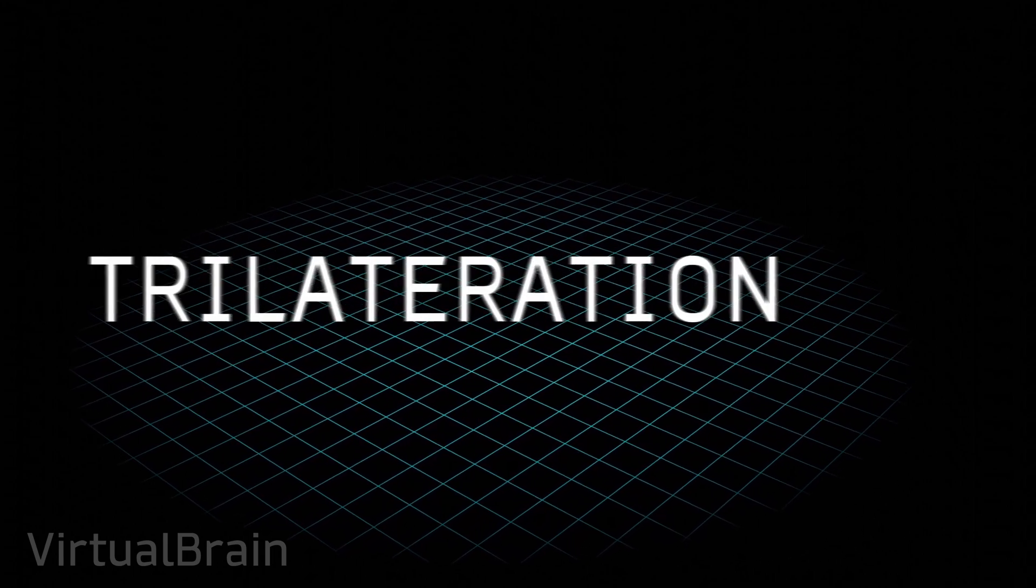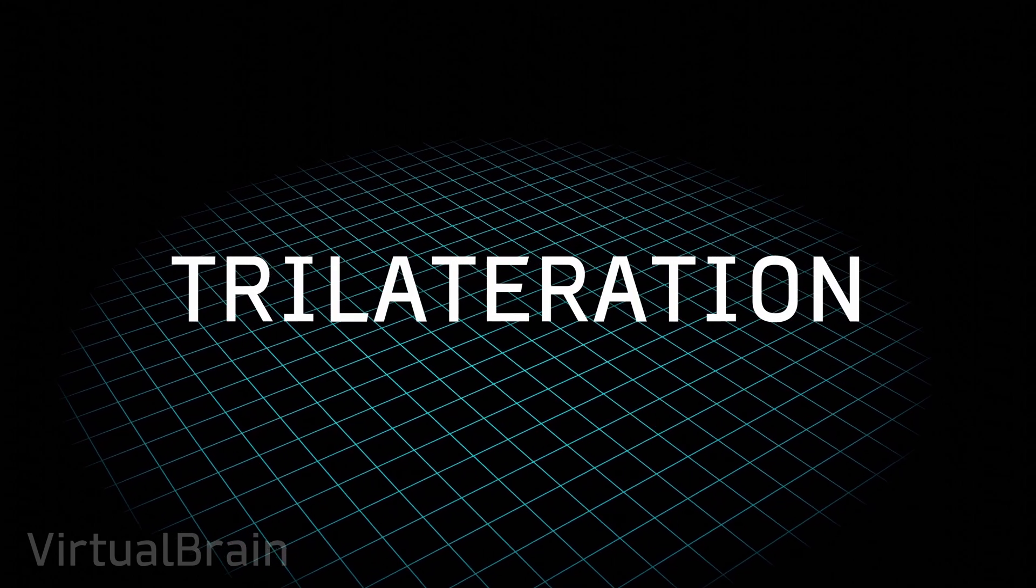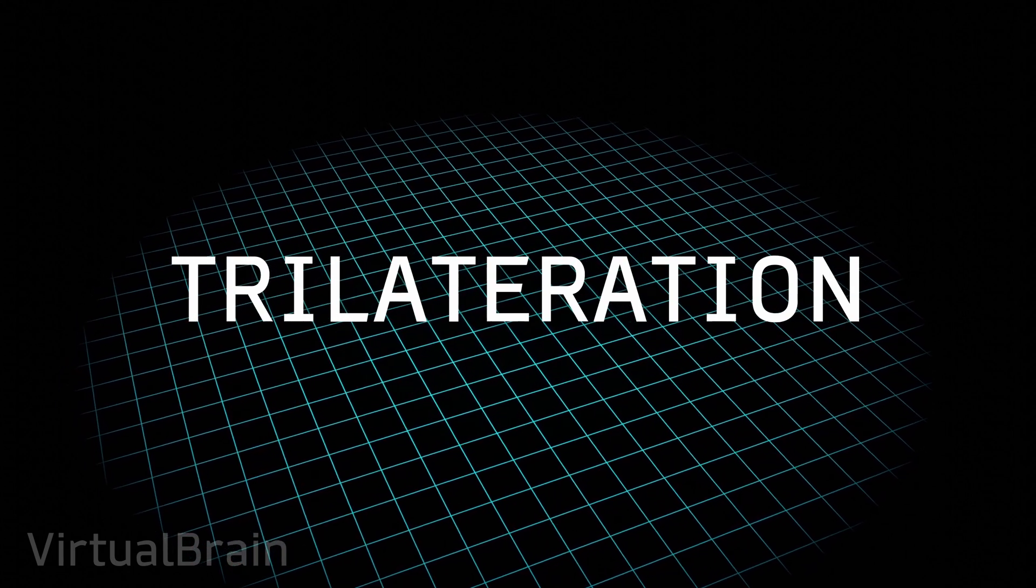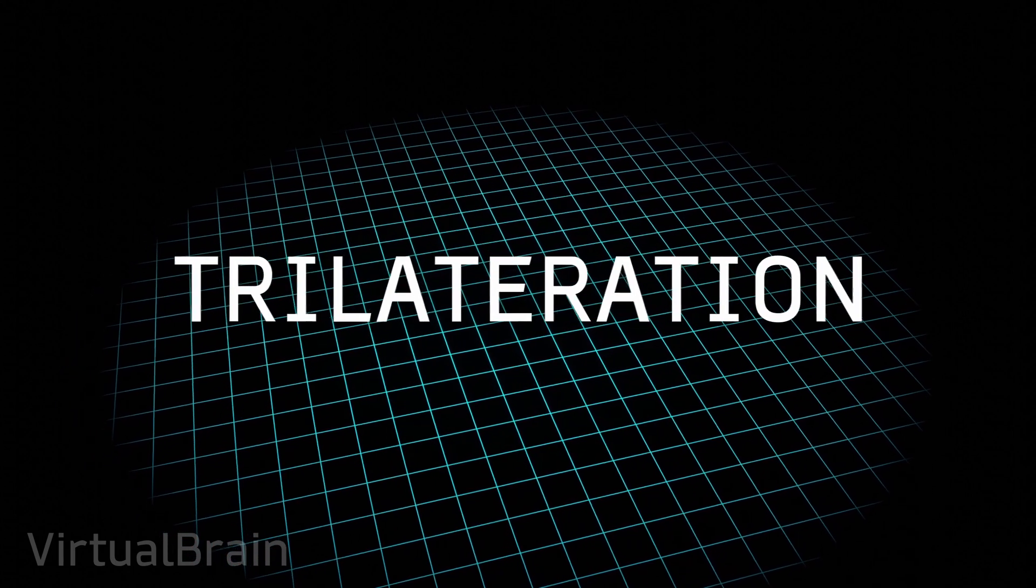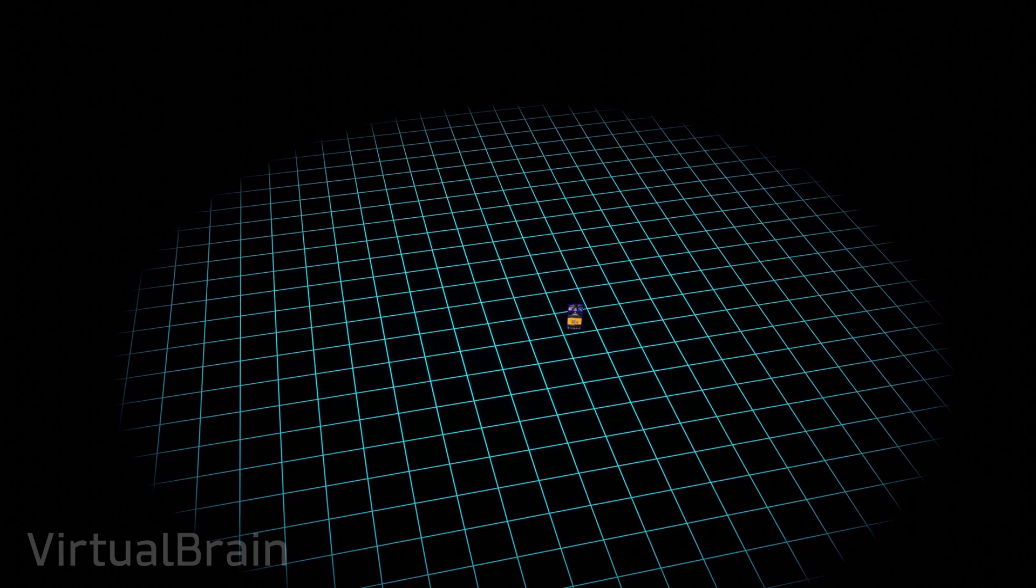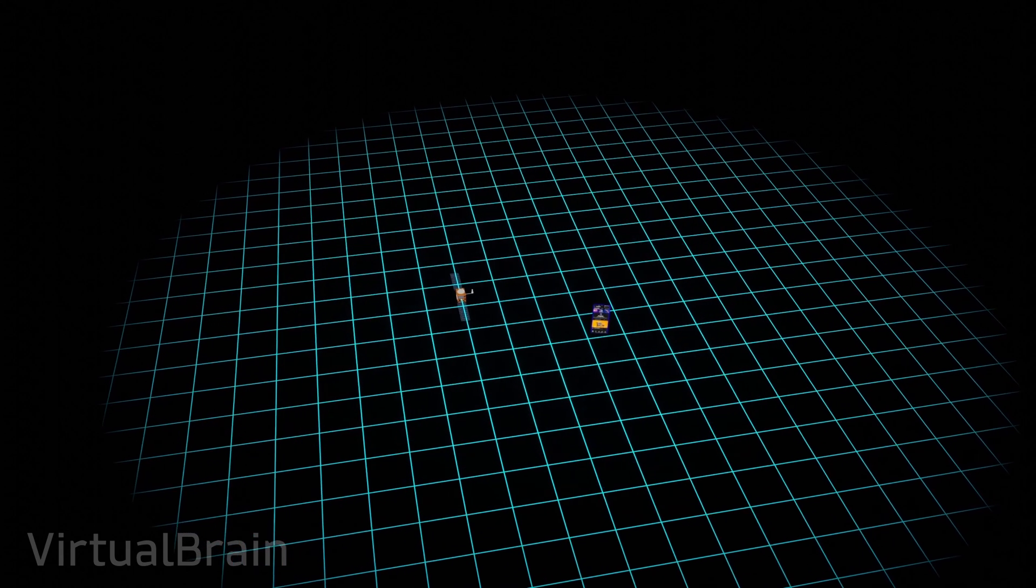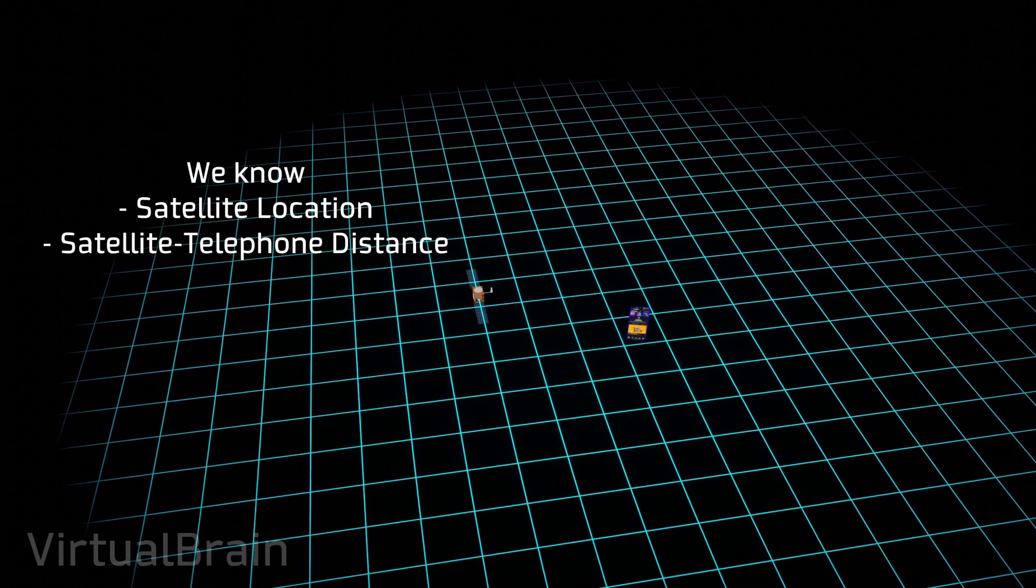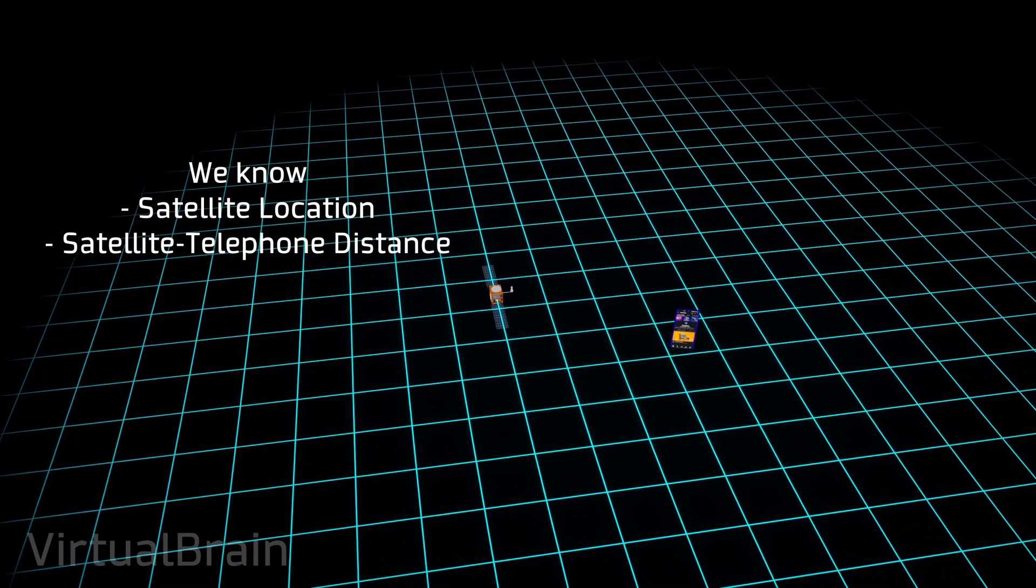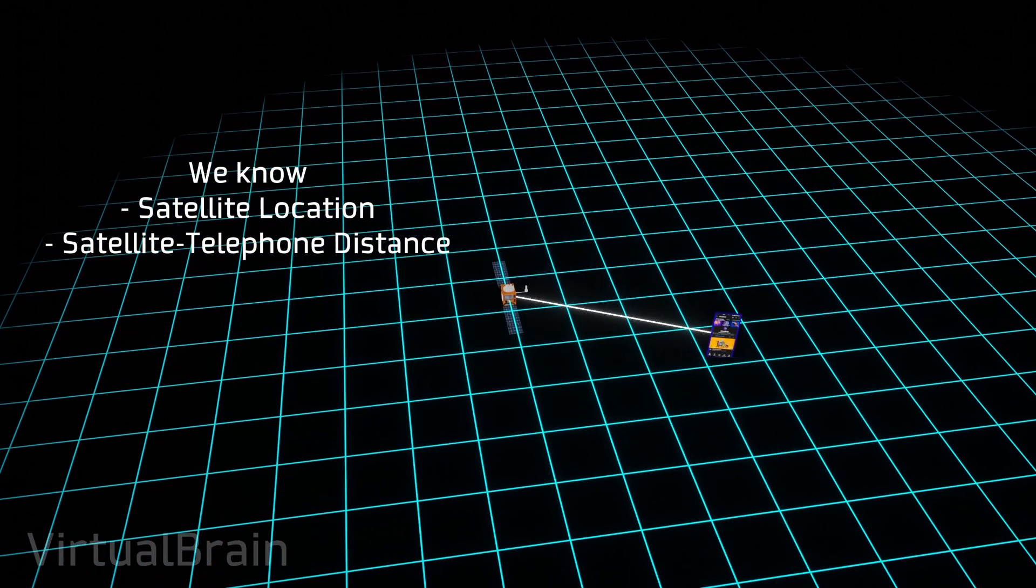With that out of the way, the key concept on which GPS works is trilateration, a mathematical method for determining the relative positions of objects using geometry. Suppose we have a phone and a satellite on a plane. On the one hand, the information we know is the position of the satellite and its distance from the phone, while on the other hand, the information we want to obtain is the location of the phone.